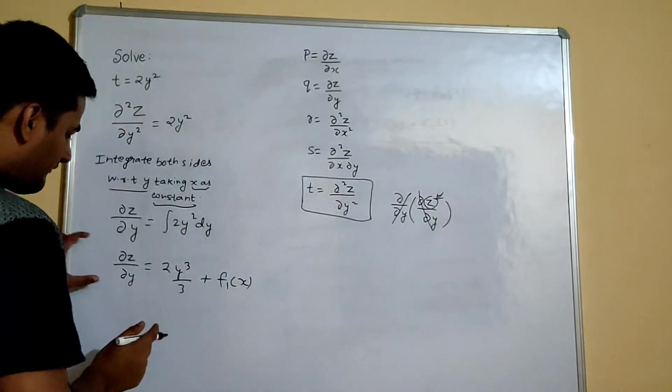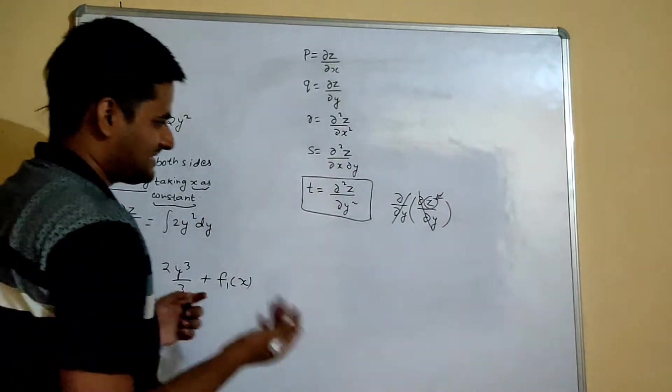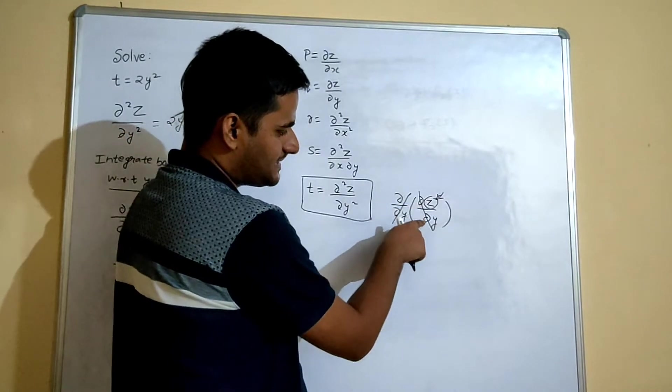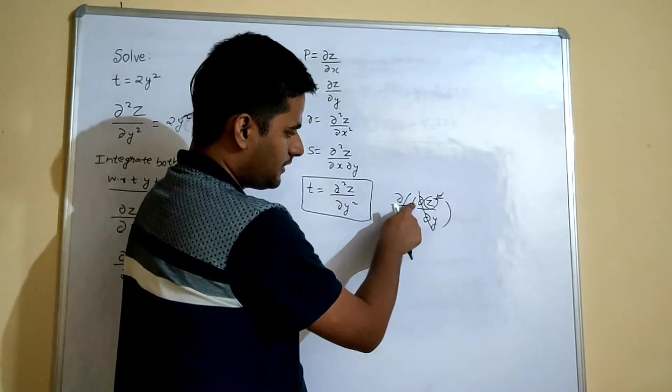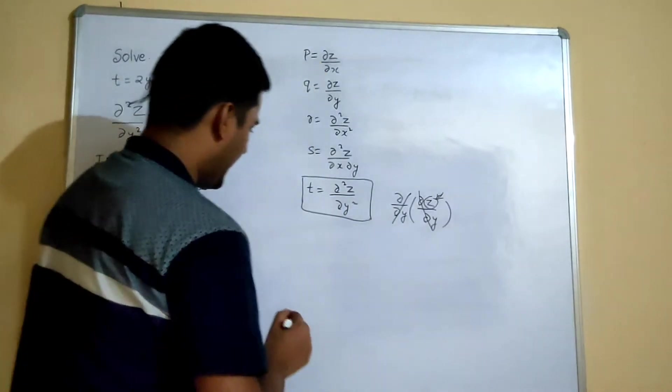Now we have got this equation. And as I told you, you have to now remove this del by del y. Because this del by del y already you have removed, so in order to remove this del by del y again...